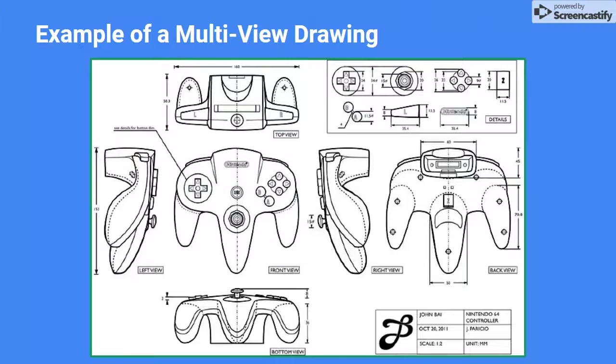Every object has six main sides that might be shown in an orthographic: the front, back, top, bottom, left, and right sides. This example shows all six in the correct orientation.